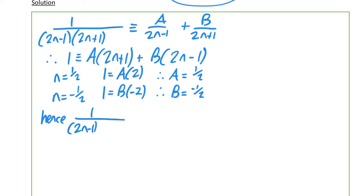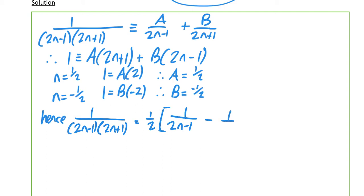Hence we can say that 1 over (2n−1)(2n+1) is equal to one half times [1/(2n−1) minus 1/(2n+1)]. You can see you've got the initial setup for our method of differences, as we had done in our previous video.